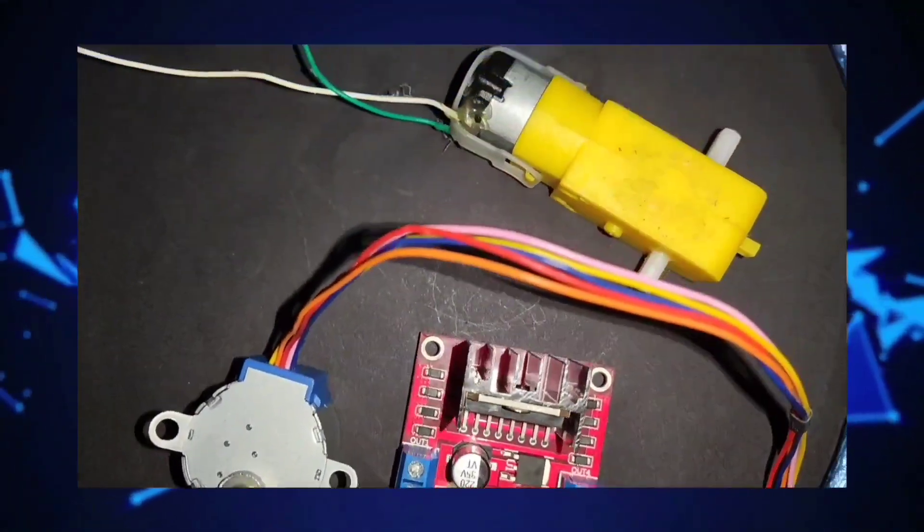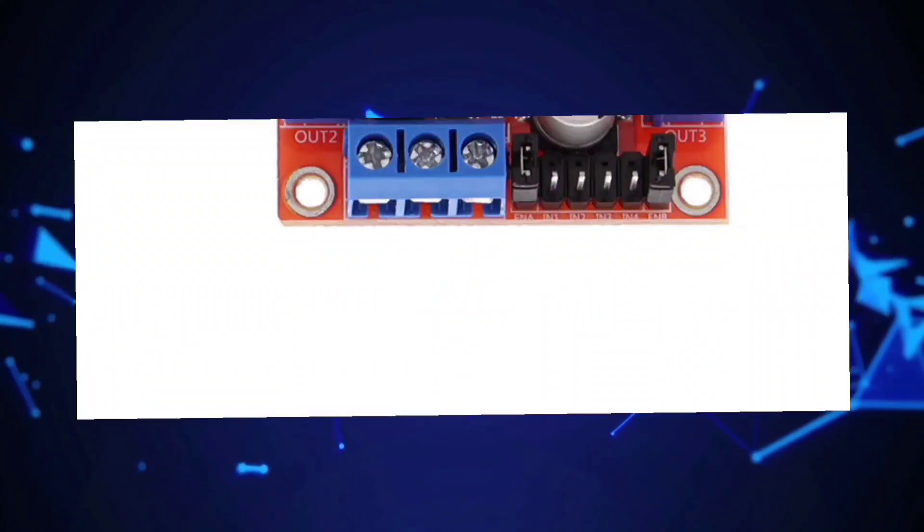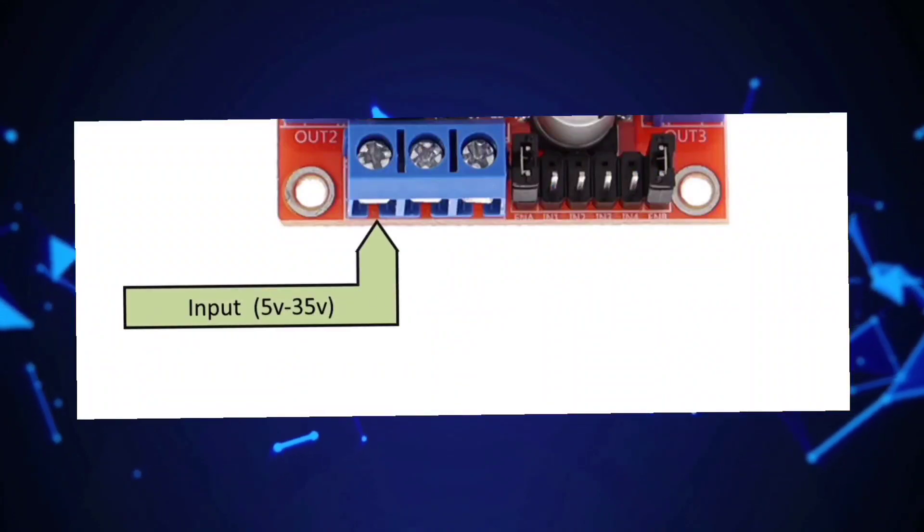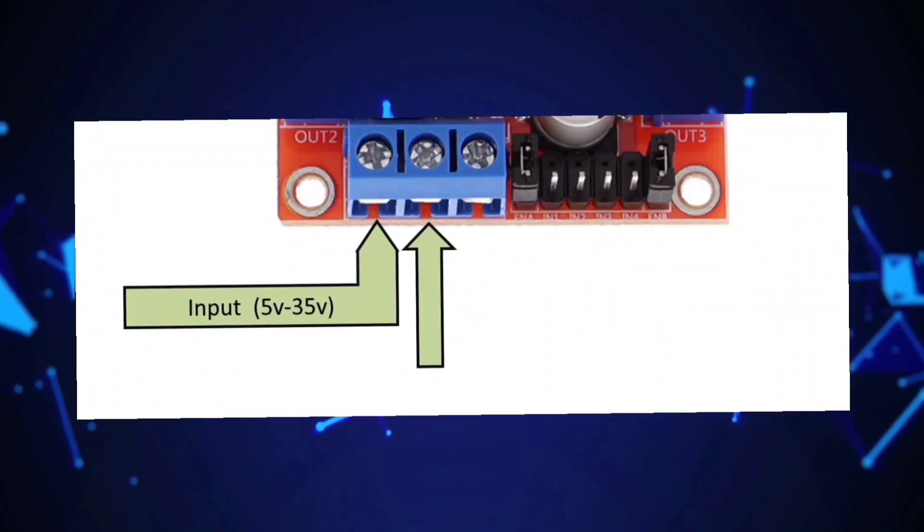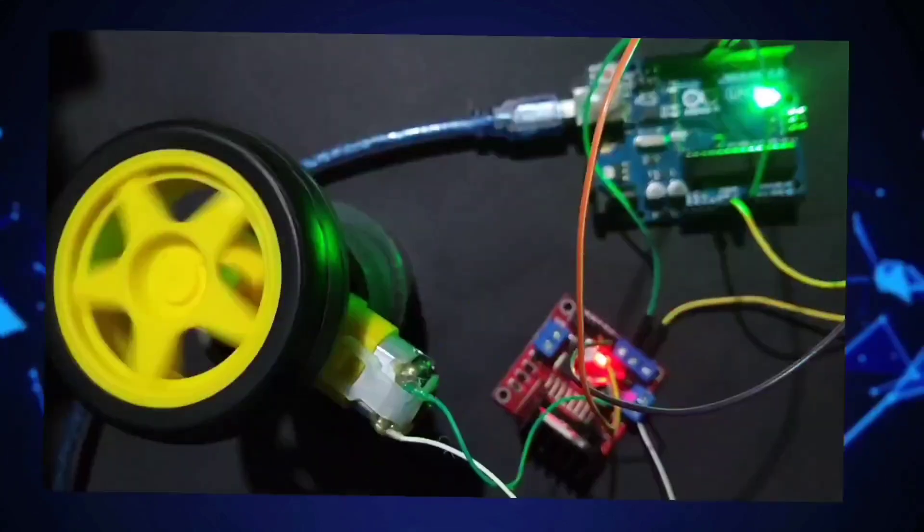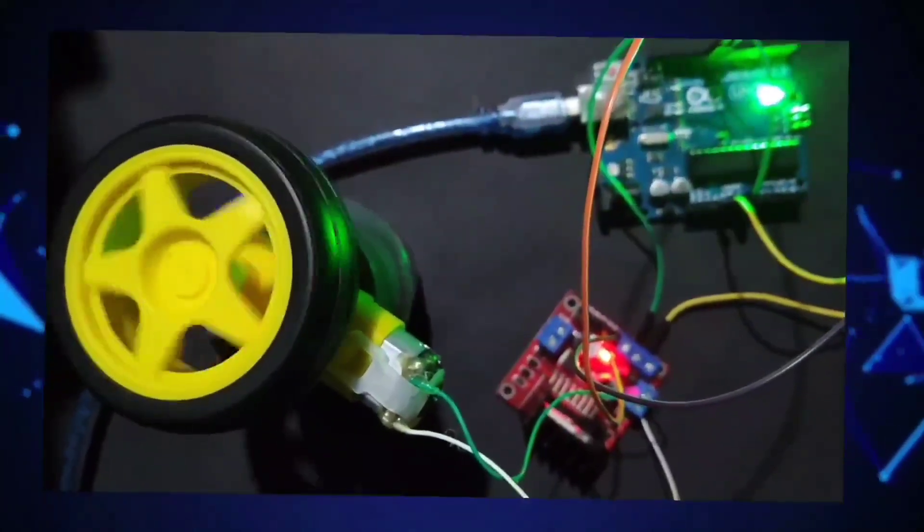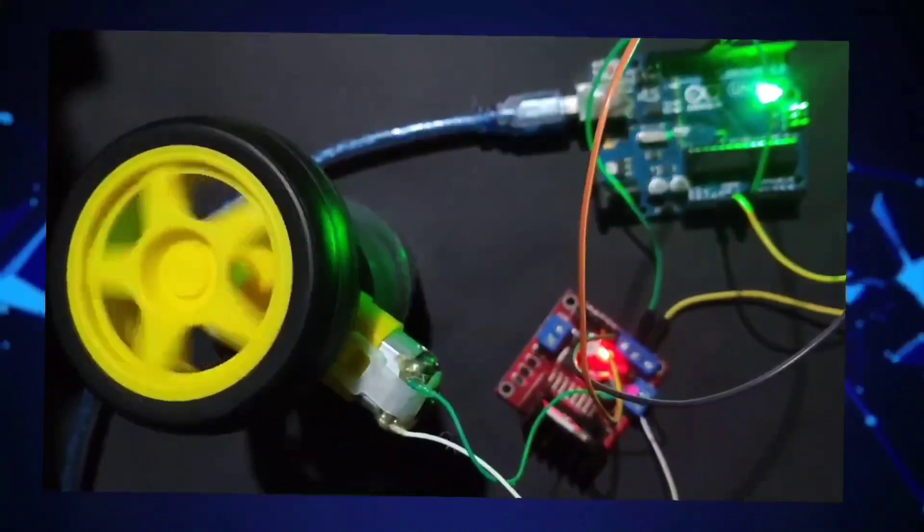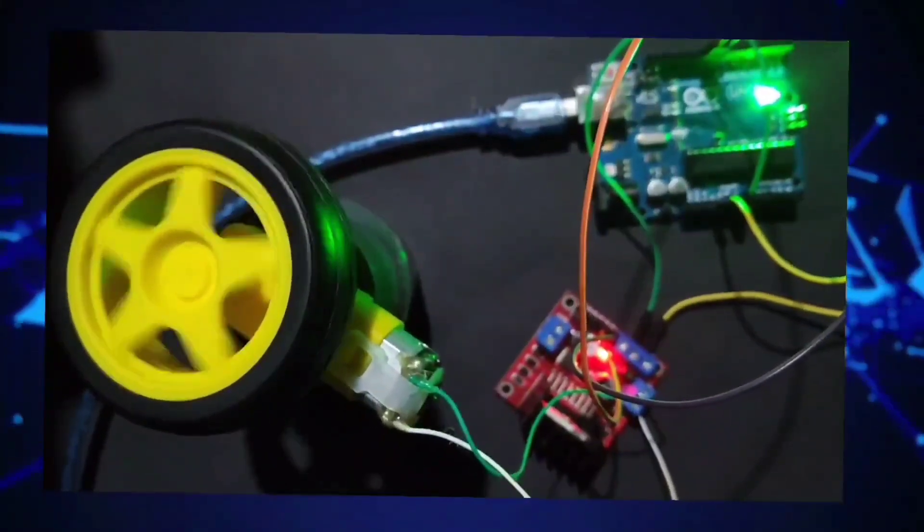The L298N supports a wide range of motor supply voltages between 5 volts and 35 volts. The IC operates at a separate logic voltage between 5 volts and 7 volts. The L298N can handle a maximum continuous current of 2 amperes per channel and a peak current of 3 amperes per channel.